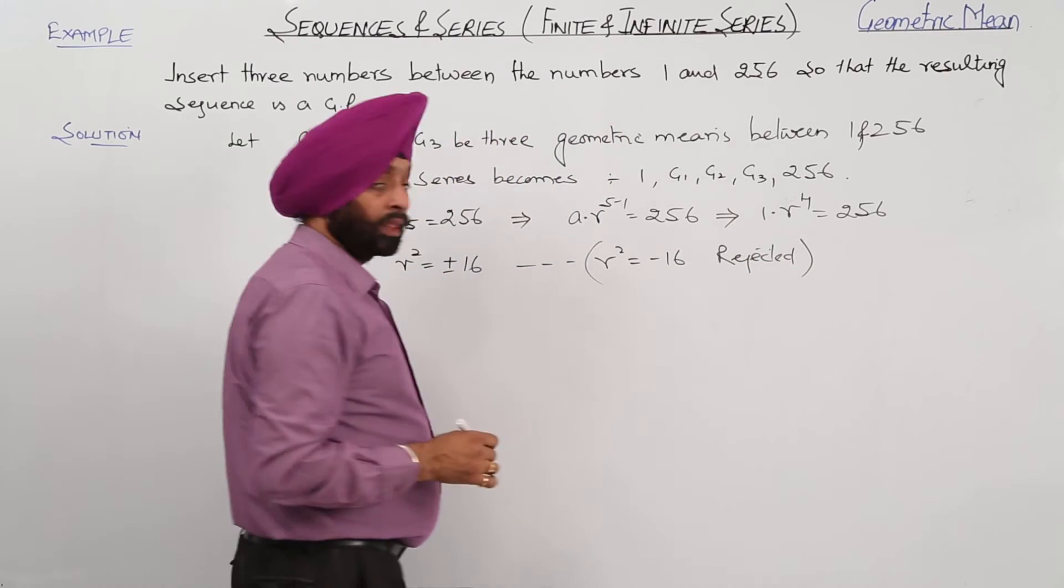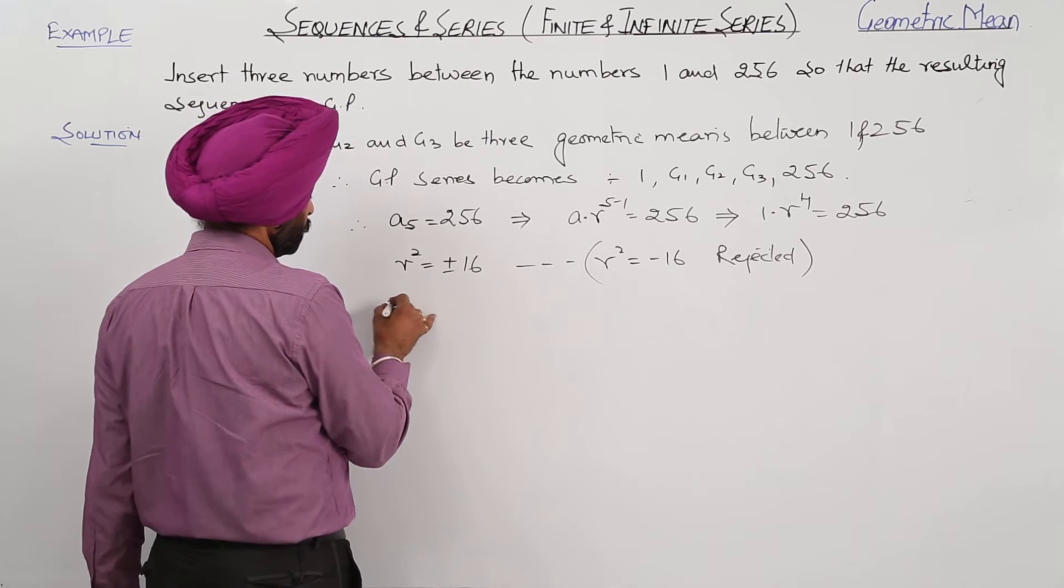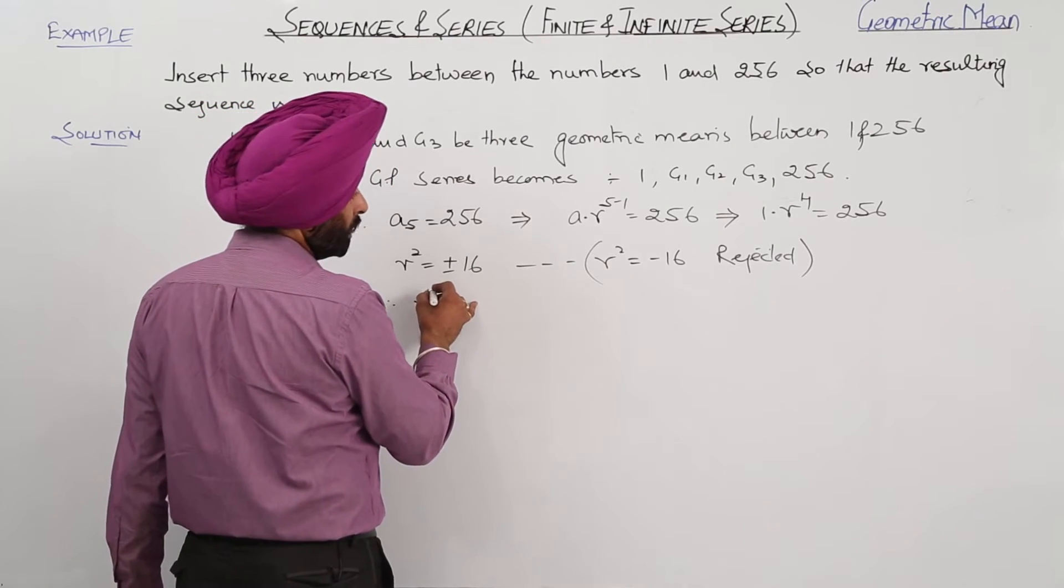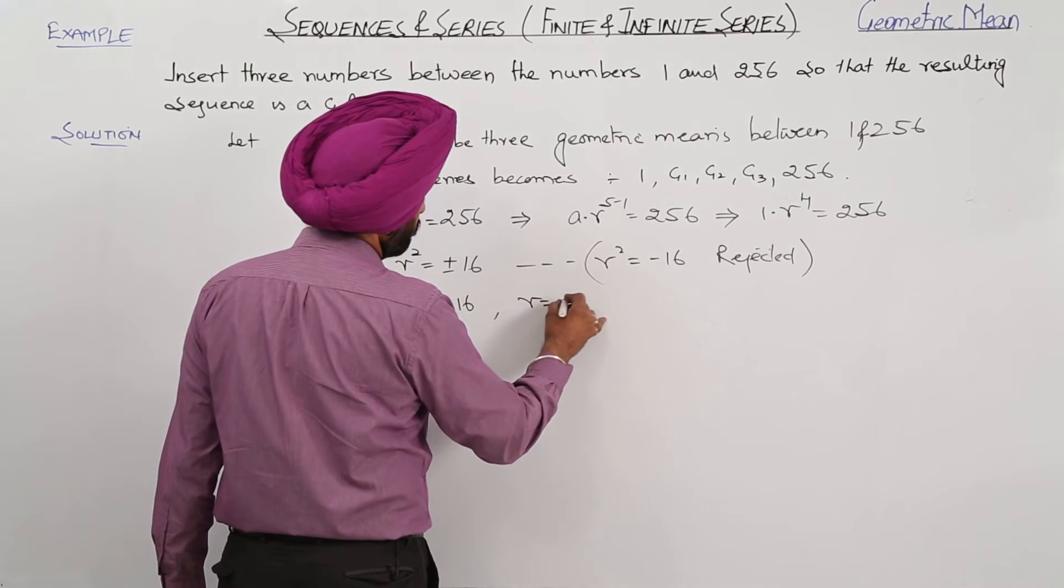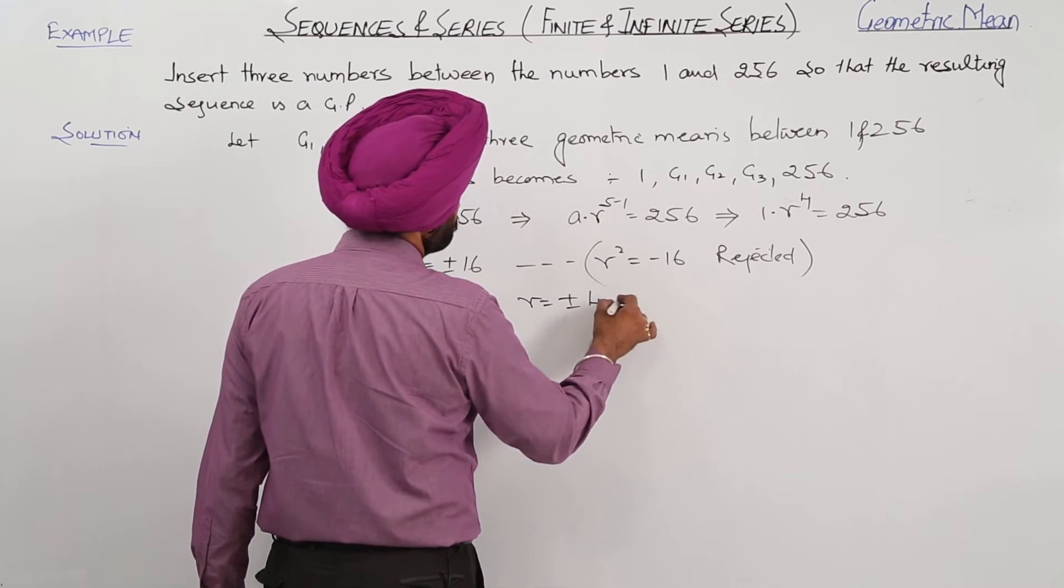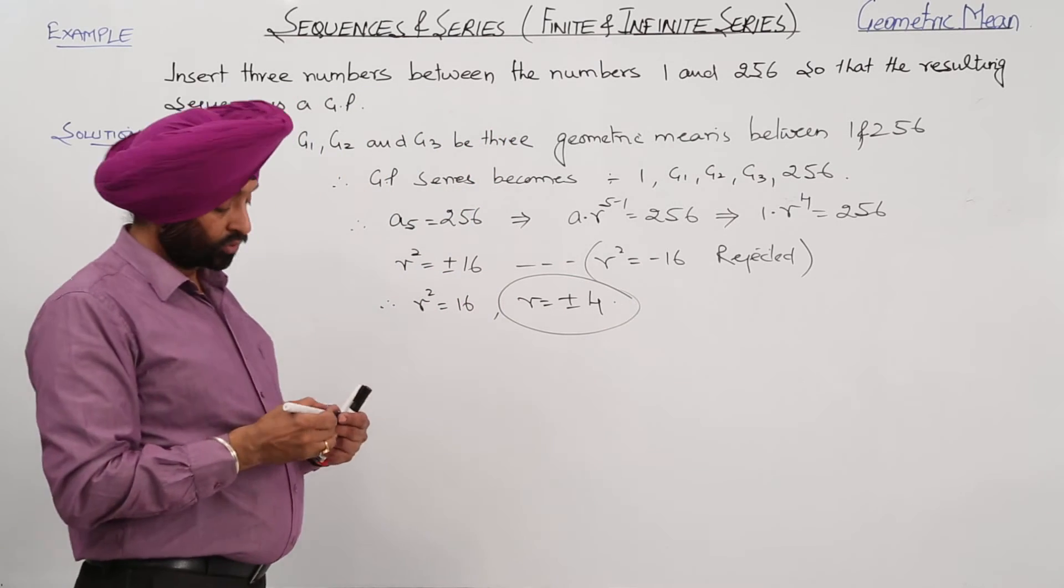So what is left? Therefore, R squared is equal to 16 and R is equal to plus minus 4. So here we got a common ratio.